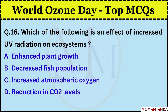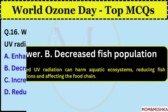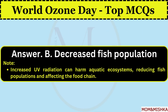Which of the following is an effect of increased UV radiation on ecosystems? Decreased fish population. Option B. Increased UV radiation can harm aquatic ecosystems, reducing fish populations and affecting the food chain.